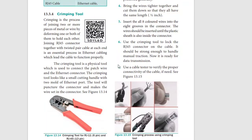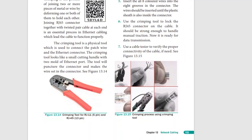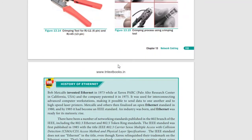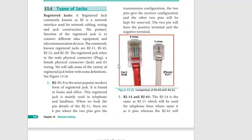Crimping tool - a crimping tool is used for this purpose. You can see it is like a cutting plier but a little different. This is used to cut wires - one wire at a time cannot be cut otherwise. It is a network interface tool used for network cabling, iron wiring, and jack constructions.